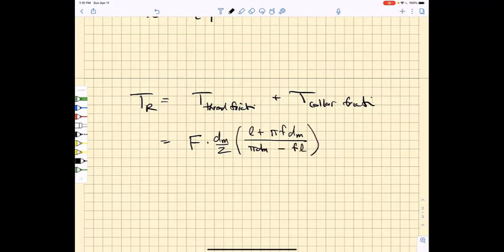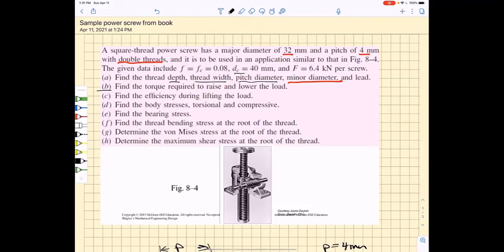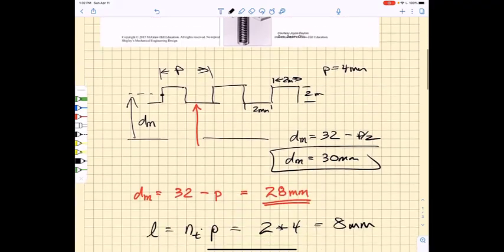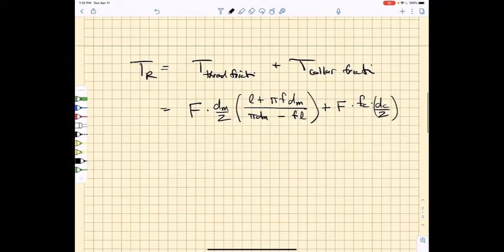We have all of those things now so we can plug them into that equation, but we have to add to this the force F, and we multiply that by the collar friction, which in this case is the same as the thread friction. We multiply that by the effective collar radius. We know what all of those terms are. The collar diameter is 40, so we know that the collar radius is 20 millimeters.